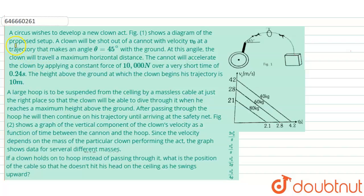The given problem states: a circus wishes to develop a new clown act. A clown will be shot out of a cannon with a velocity v₀ at a trajectory that makes an angle theta equals 45 degrees with the ground. At this angle, the clown will travel a maximum horizontal distance — maximum horizontal range.